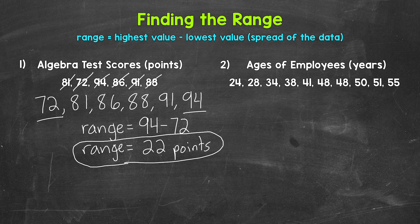So that's the spread, the range of the data. The data goes from the lowest score of 72 points to the highest score of 94 points. So again, the range is 22 points. Now, when it comes to range, the higher the range, the greater the spread, so the data is more spread out. The lower the range, the data will be less spread out.